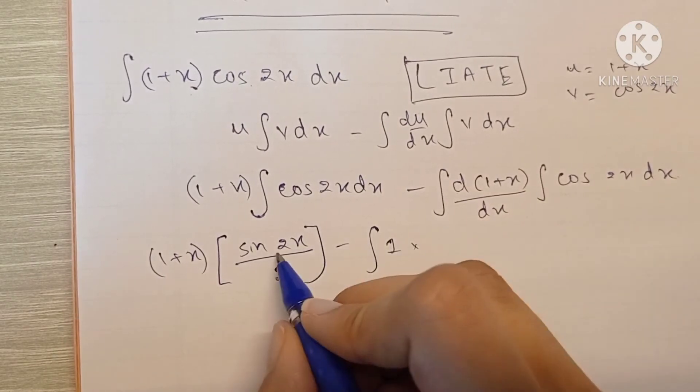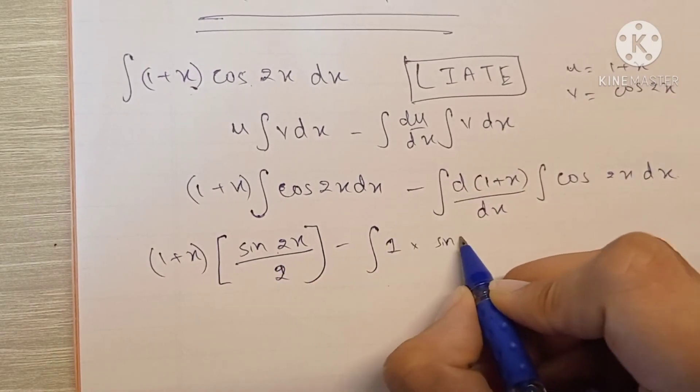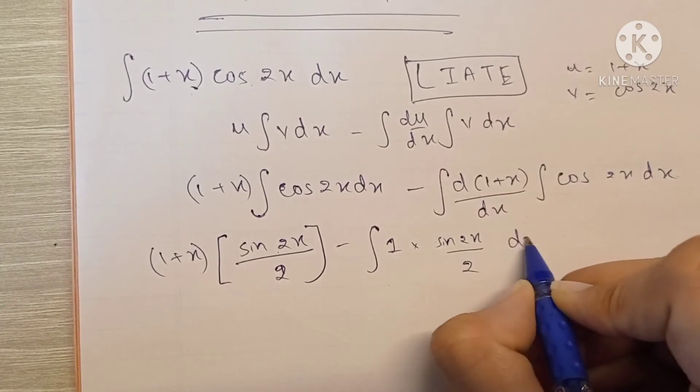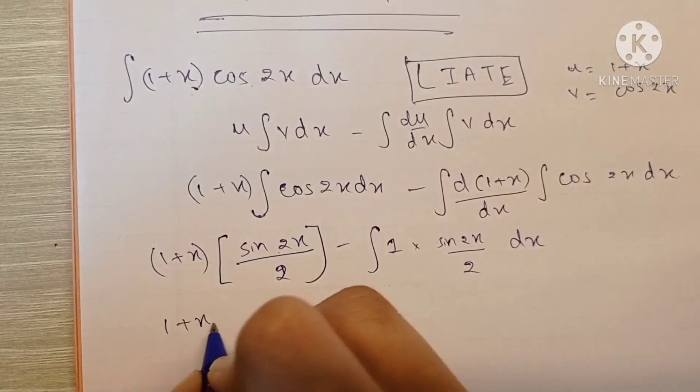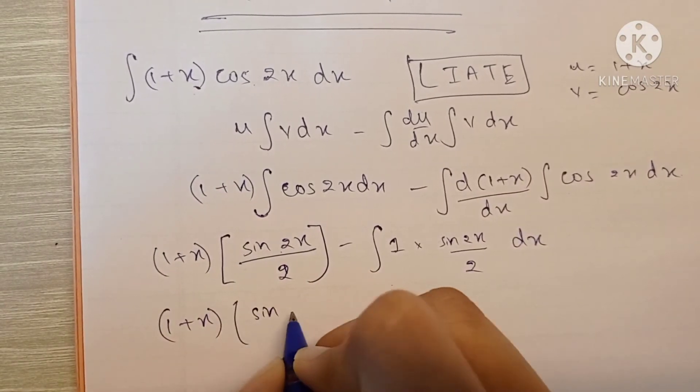So this becomes (1+x)sin(2x) upon 2 minus, we can take 1/2 outside since it's a constant, integration of sin(2x)dx.